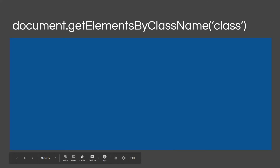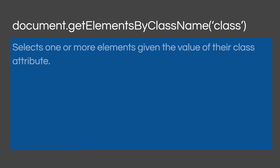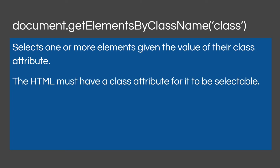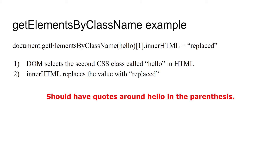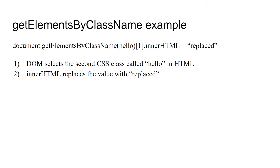Now let's talk about getting elements by class name. Let's say you have more than one element with the same class in your HTML document — maybe eight paragraph tags all with the same class. What `getElementsByClassName` does is select one or more elements given the value of the class attribute. So if we say `document.getElementsByClassName('hello')` with bracket one, we're selecting the second one. Remember we count from zero, so zero is the first and one is the second.